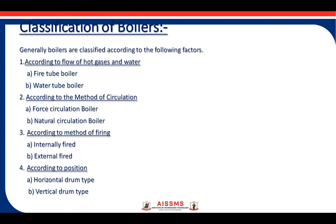The next classification is according to the method of circulation: forced circulation boilers and natural circulation boilers. In a forced circulation boiler, an artificial agent such as a pump is used to force the circulating fluid. In natural circulation boilers, no pumps or artificial devices are used to force the water.